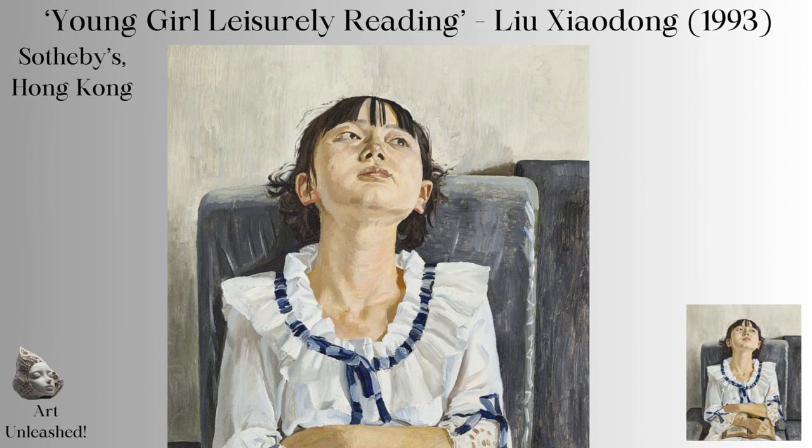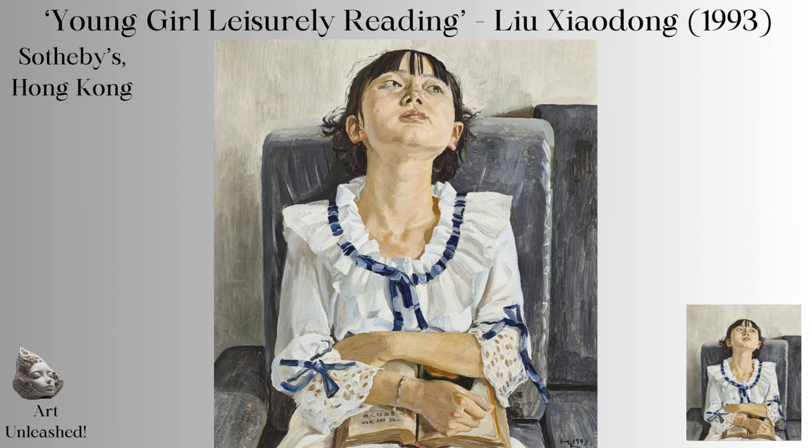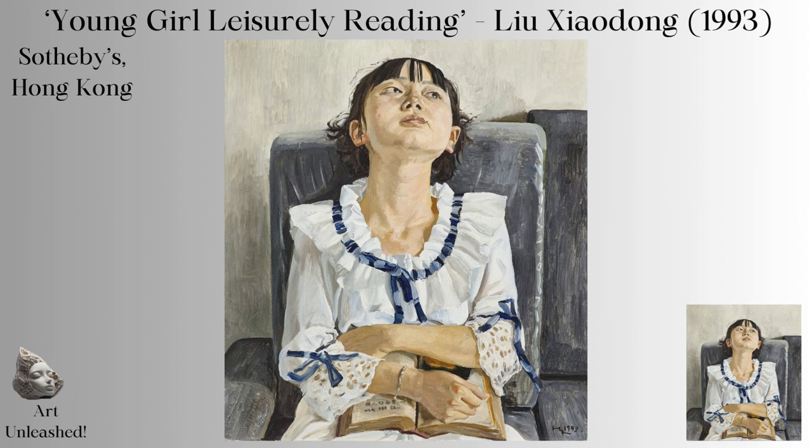The composition, with the girl centrally placed, leads the viewer's eye directly to her face and then to the open book, creating a triangle that forms the heart of the painting. The use of space is intimate, with the girl and her chair occupying the majority of the frame, inviting us into her personal space, her moment of leisure. The balance of the composition is carefully maintained, with the girl's presence commanding the space without overwhelming it.